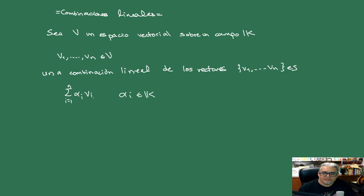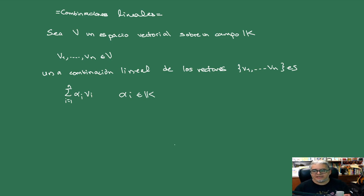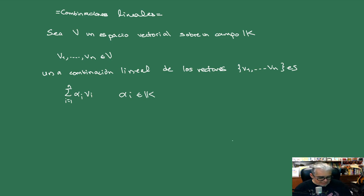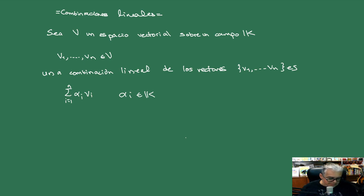Entonces vamos a sumar α₁V₁ más α₂V₂ más etcétera. Lo único que vamos a pedir es que no todas sean cero. Lo que quisiéramos ver hoy es la posibilidad de escribir cualquier vector en términos de combinaciones lineales de algún conjunto de vectores. A esos conjuntos de vectores que permiten escribir a los demás vectores como combinaciones lineales de estos, les vamos a llamar una base.